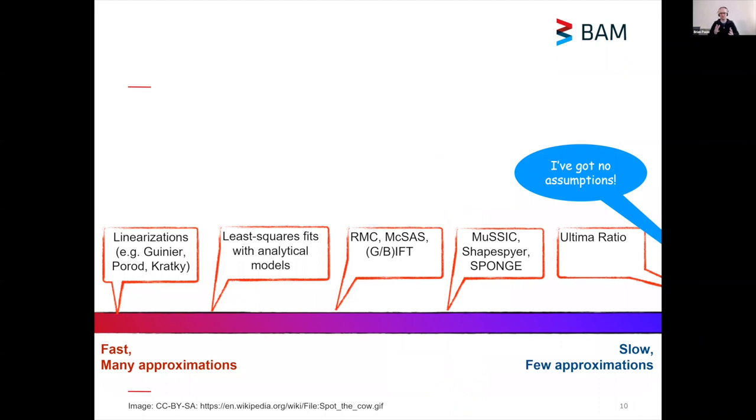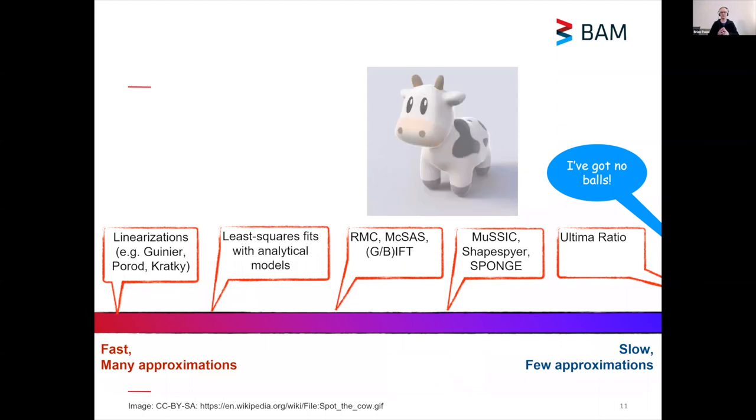So what is this ultimate ratio? Well the nice thing is it's got no assumptions, zero assumptions. You can simulate a cow as a cow and not a sphere, so it's got no balls.